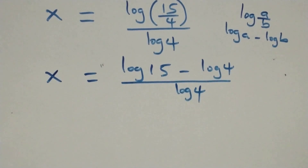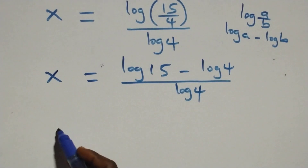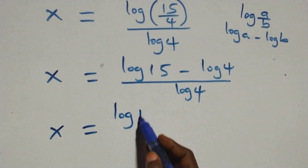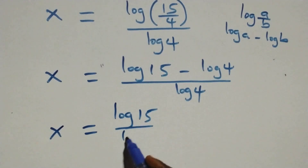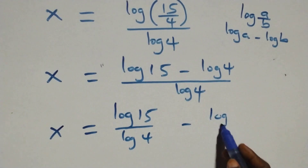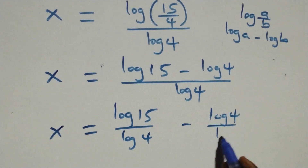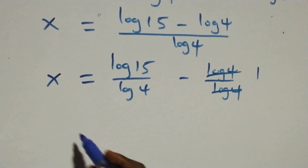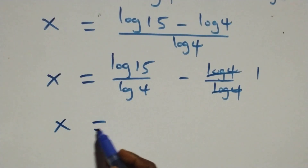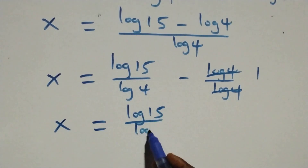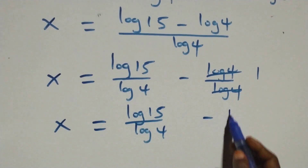We separate this into two fractions: x equals log 15 over log 4 minus log 4 over log 4. The log 4 terms cancel each other, giving 1. So we have x equals log 15 over log 4 minus 1.